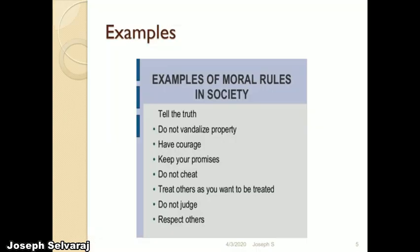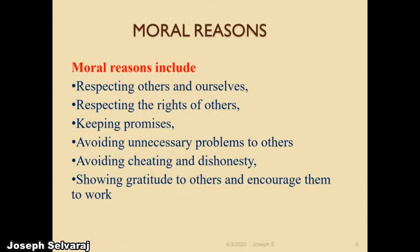Examples of moral rules in society: first, telling the truth everywhere — in the work environment and with relatives. Do not vandalize property. You should have courage and keep your promises. You should not cheat others. Treat others as you want to be treated. Do not judge a person by the side from which you are seeing them. Respect others.